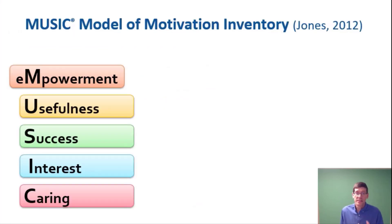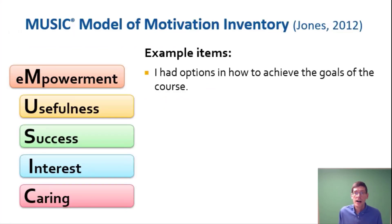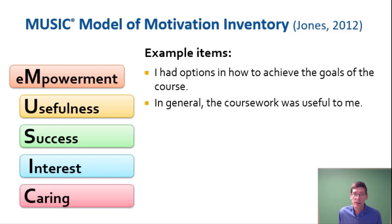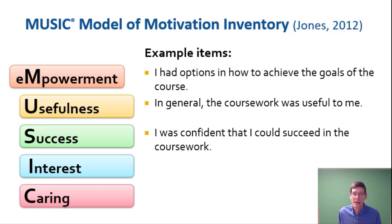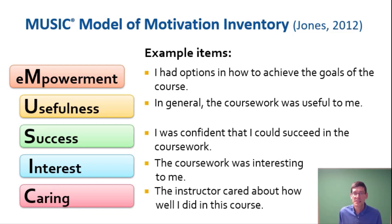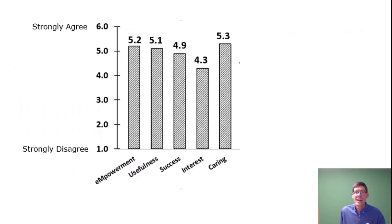For example, the inventory has items like: 'I had options in how to achieve the goals of the course,' 'the coursework was useful to me,' 'I could succeed in the coursework,' 'the coursework was interesting,' and 'the instructor cares about how well I did.' You can take the scores from these questions, look at them, and see where you're low. Here's an example from one of my classes.